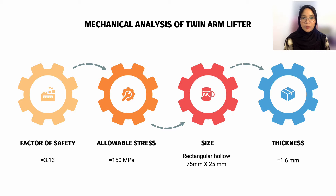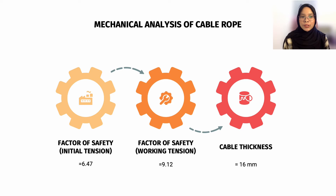For the mechanical analysis of the twin arm lifter, we calculated the safety factor and allowable stress using the dimension of a rectangular hollow 75×25 mm with a thickness of 4 mm. This increases the actual design factor from 3 to 3.13. For the suspension cable, a factor of safety of 5 is required by ISO 4375. The initial tension factor of safety is 6.47 and the working tension is 9.12. Since both safety factors exceed the recommended value of 5, the system is safe.